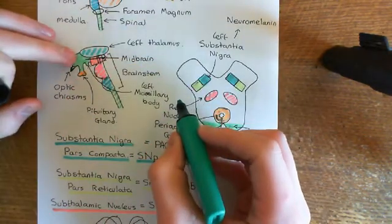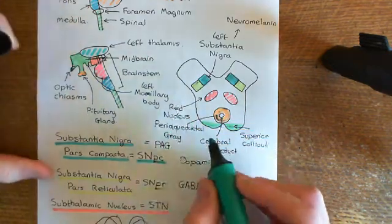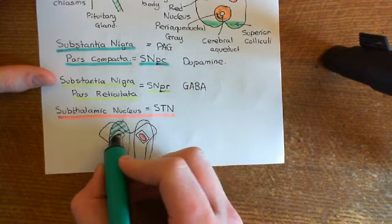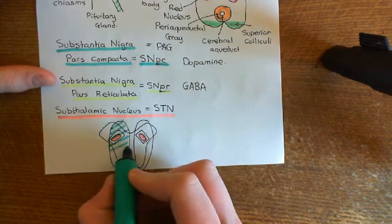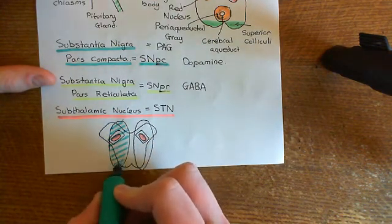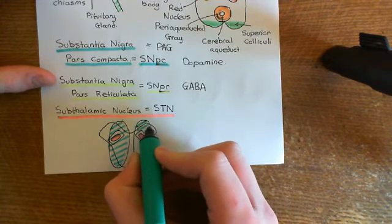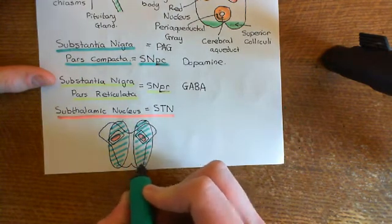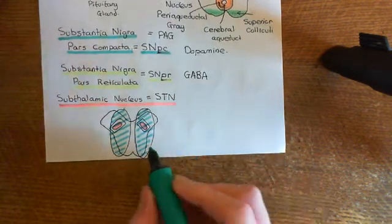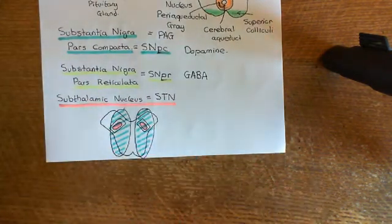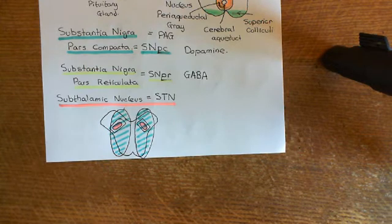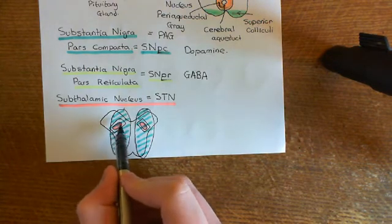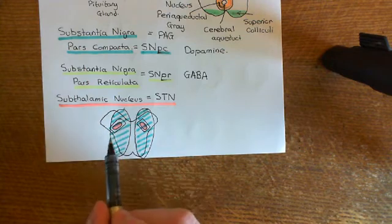Previously we could only see the left thalamus, but looking from above we can see both thalami. Here in turquoise is the left thalamus, and this other one is the right thalamus. They're sitting on top of the midbrain and also on top of the subthalamic nuclei. So the subthalamic nuclei are in between the substantia nigra below and the thalamus above.